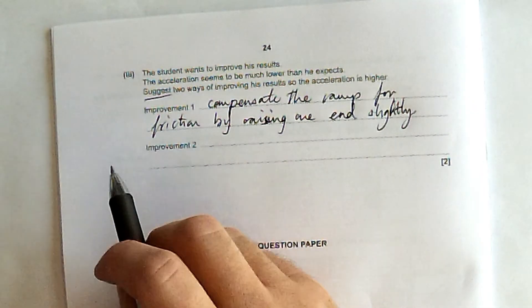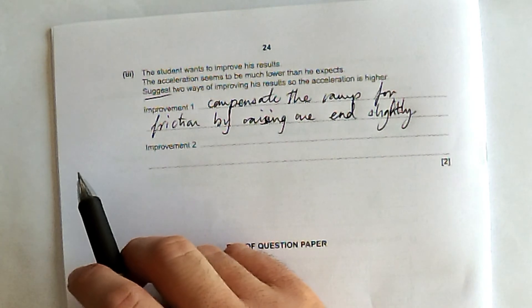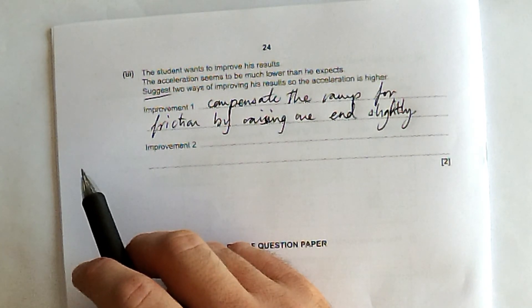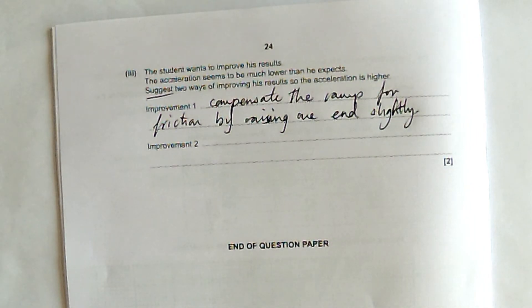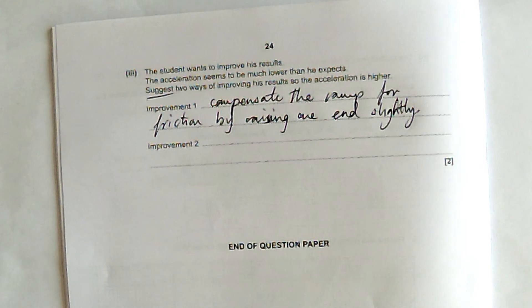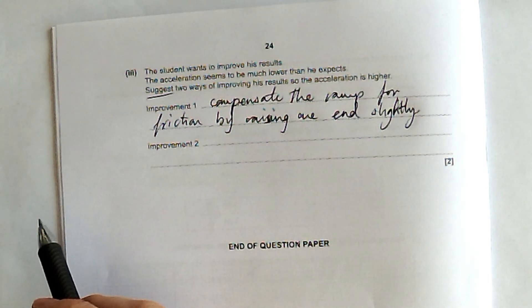Now, then they go on to say, well, what you could do is you could retake anomalous results, or you could take multiple readings and then take an average. Now, actually, I don't think that that is really a fair way to improve this experiment so the acceleration is higher.